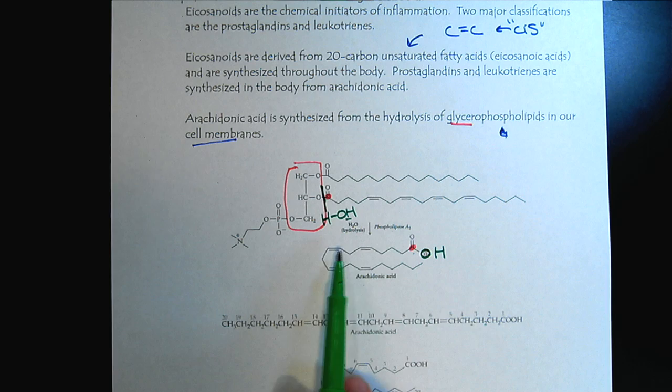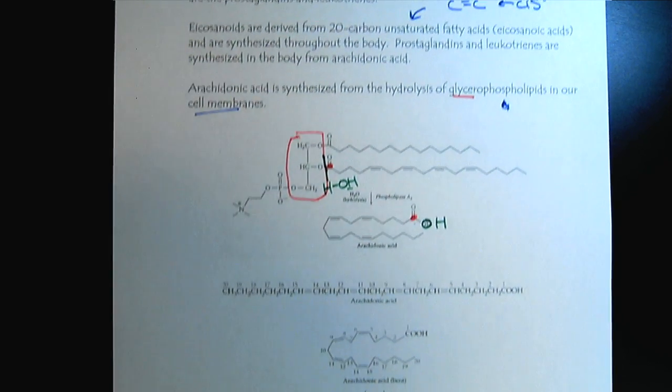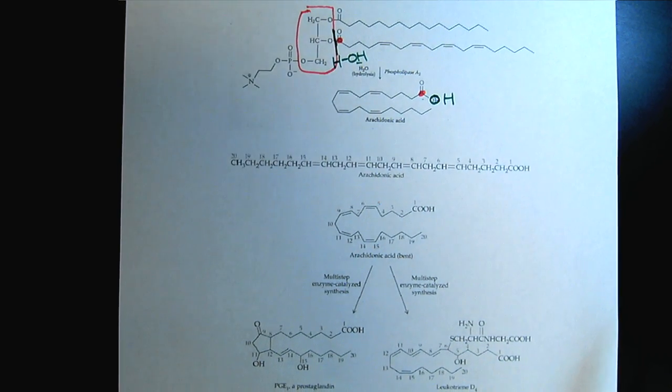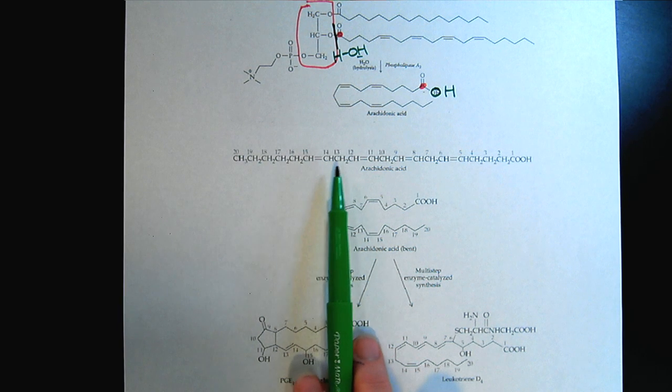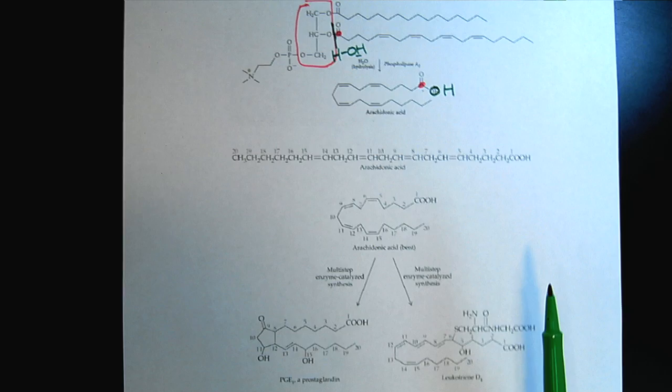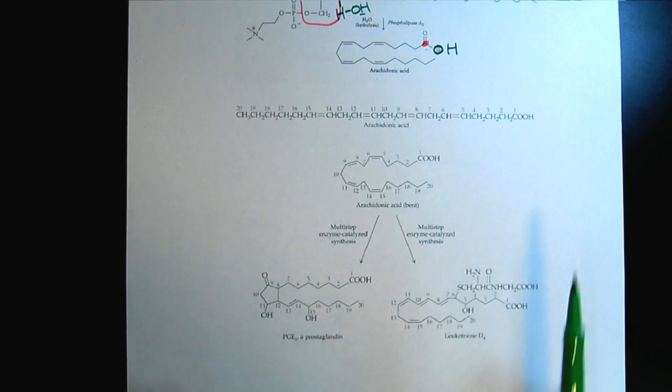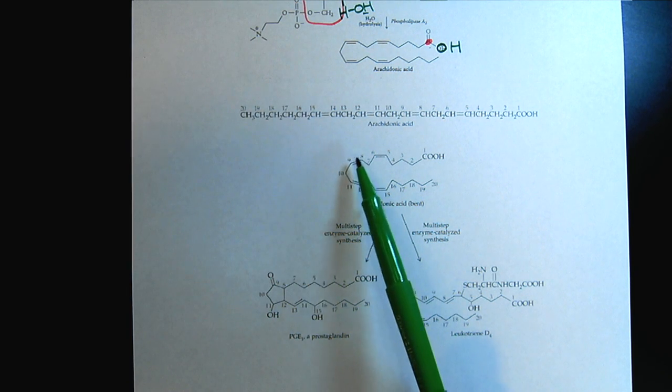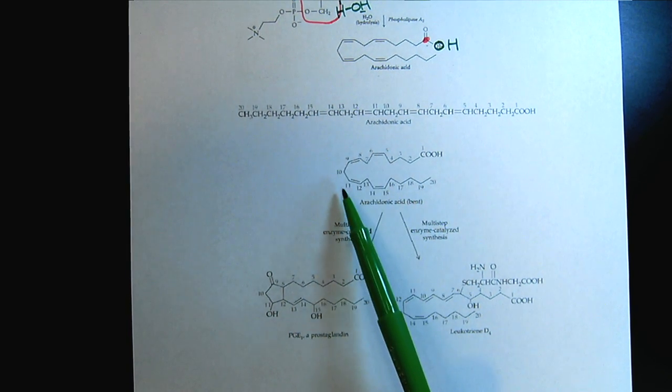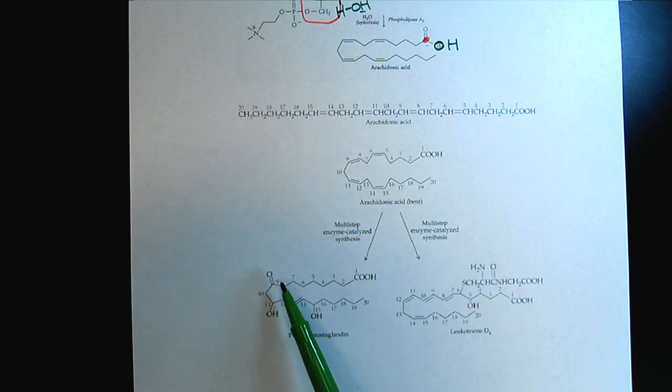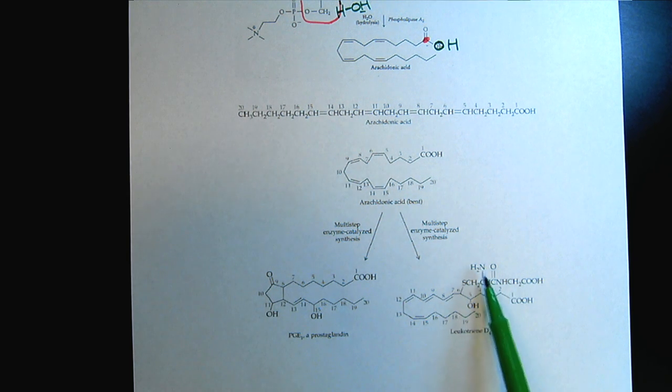Here is our arachidonic acid, which with those cis double bonds gets that curved shape. Sometimes we see arachidonic acid written in a linear form where it's not explicitly showing the cis double bonds. It's important to recognize that structure because it helps us understand how it can be used as a precursor, especially for prostaglandins. At carbons 8 through 12, the cis double bonds set us up for ring formation. And at carbons 6, we create this part for the leukotrienes.